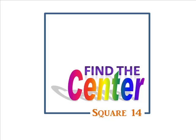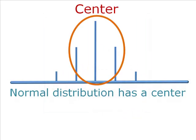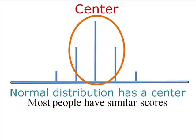In square 14, you're going to try to find the center of your distribution. The reason we look for the center of a distribution is because normally distributed variables have a center — most people are in the middle of the curve. Although there is some variability, the majority of people have similar scores.